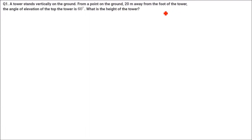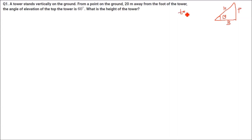Most of the time we are going to take the tan of an angle. In a triangle with angle theta, this is the perpendicular, this is the hypotenuse, and this is the base. So most of the time we take tan theta, that is perpendicular by base. Sometimes we may take sin theta or cos theta, but most of the time the equations are solved using tan theta.